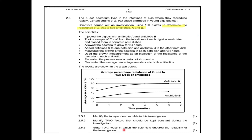Question 2.5.3: State two ways in which the scientists ensured the reliability of the investigation. The question says 'ensured' — meaning reliability is already ensured and you have to select it from the text. Firstly, 100 piglets were used — with reliability, you use a large sample size, so you could say '100 piglets were used.' The other thing you could say was the scientists repeated the process over a period of six months and calculated the average percentage resistance to both antibiotics. You have to write it as it is in the text.